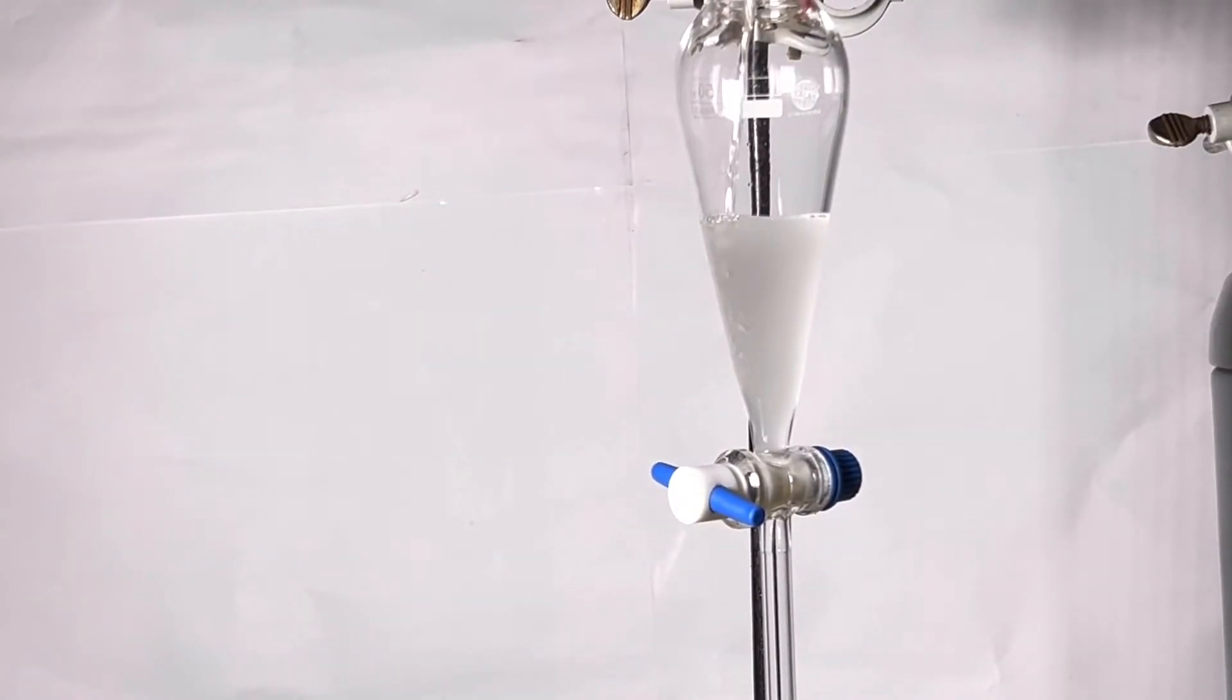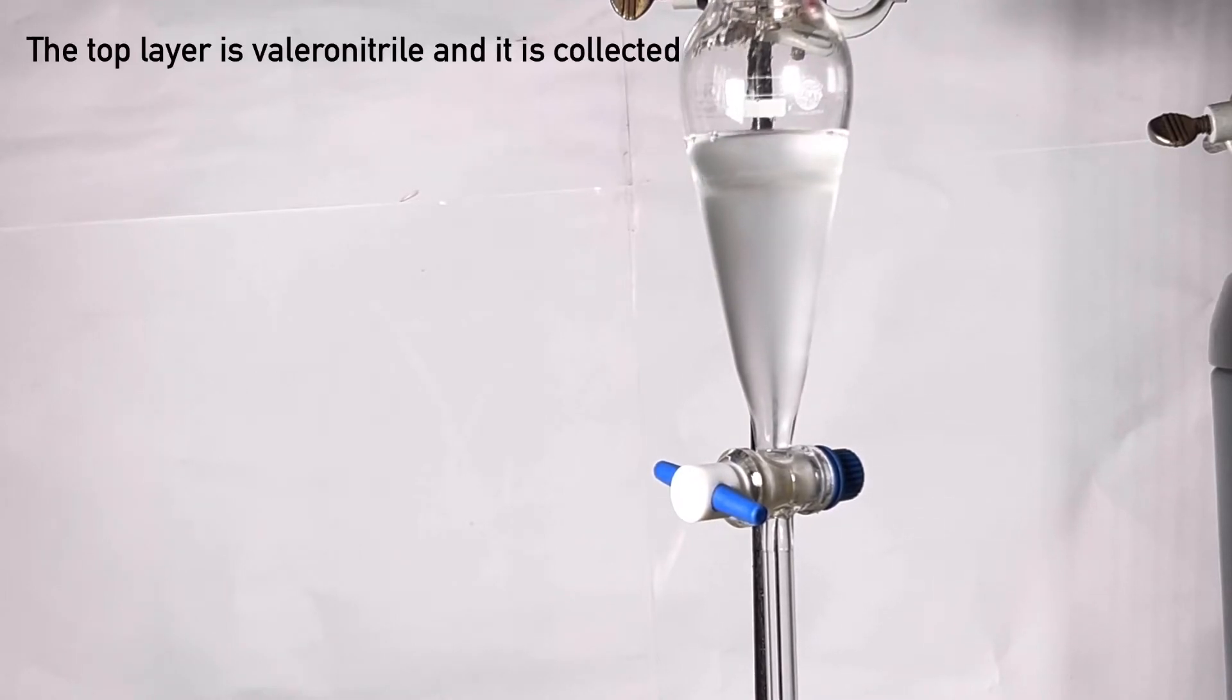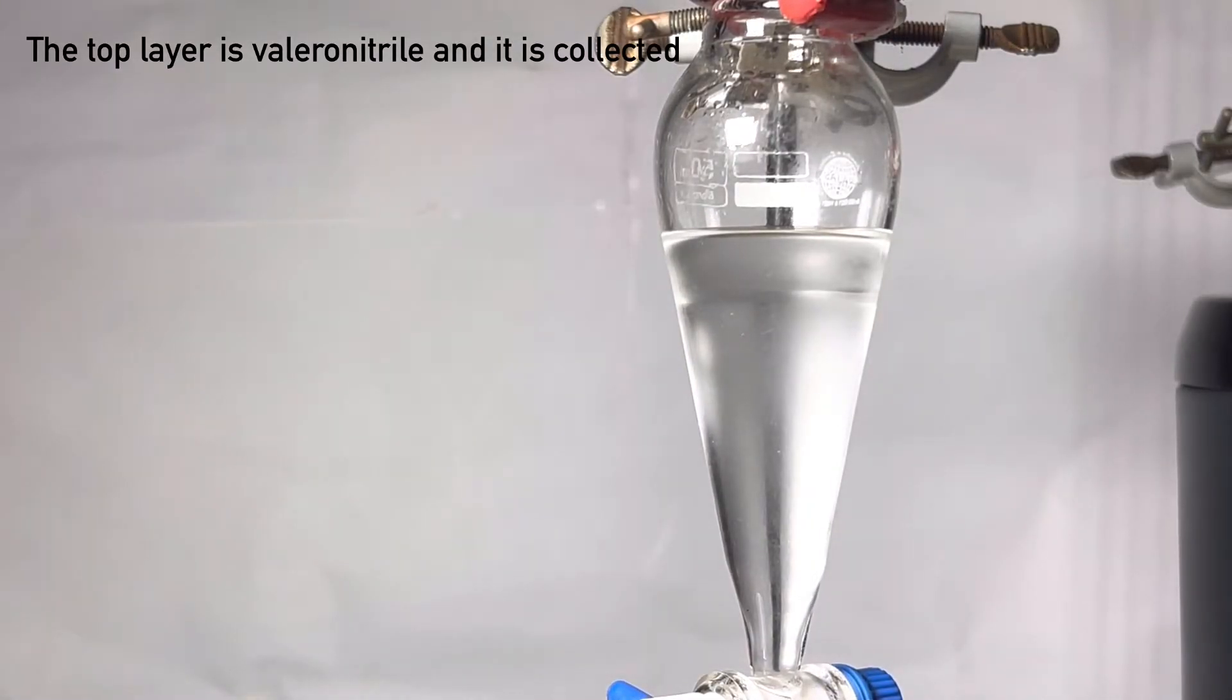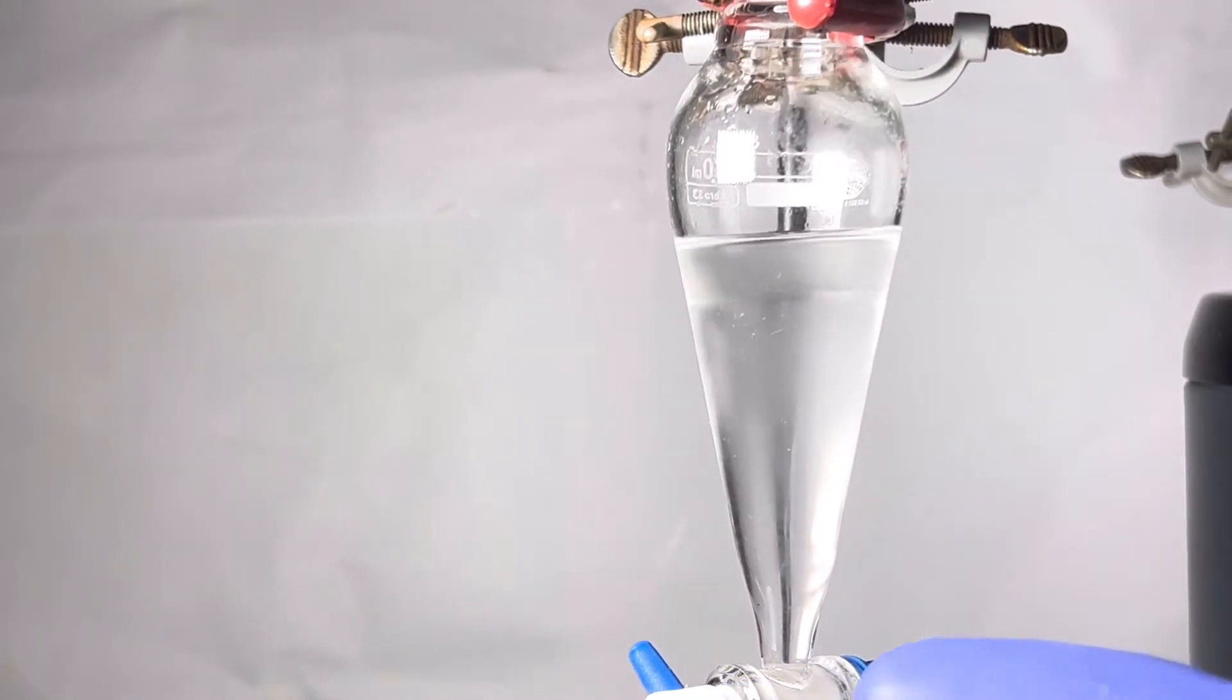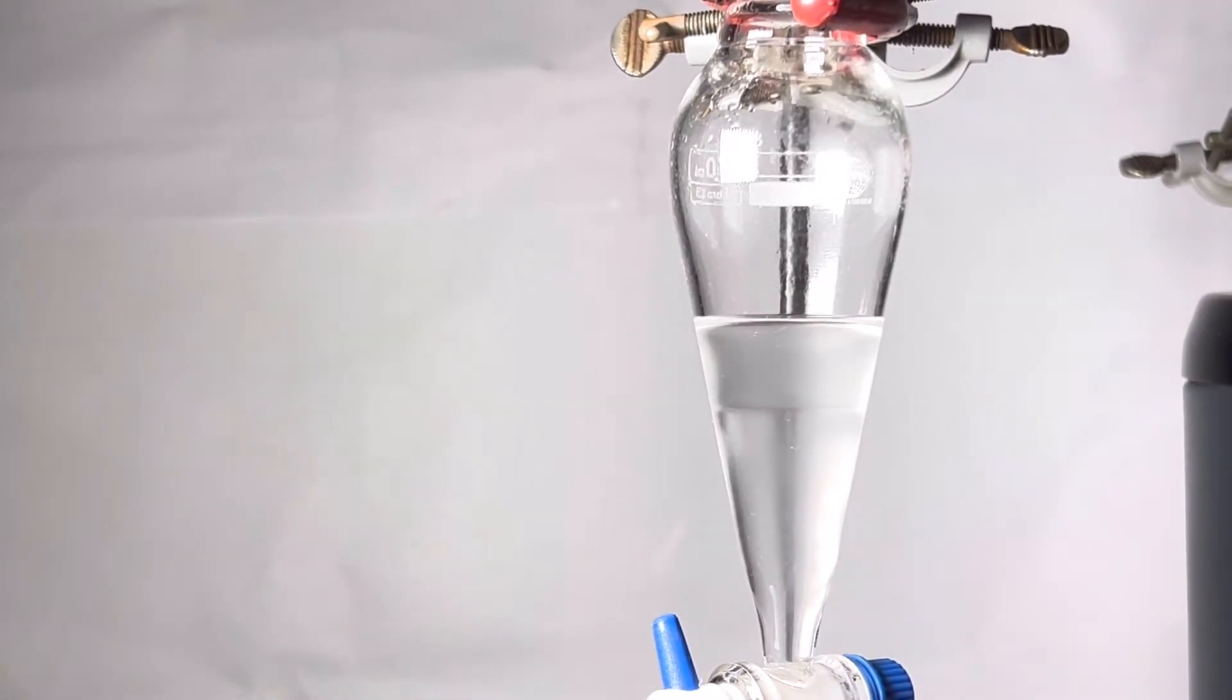The contents of the receiving flask was transferred to a small separatory funnel. In the separatory funnel we clearly notice the top layer and that is the valeronitrile. It was separated from the aqueous layer and was collected in a small round bottom flask.